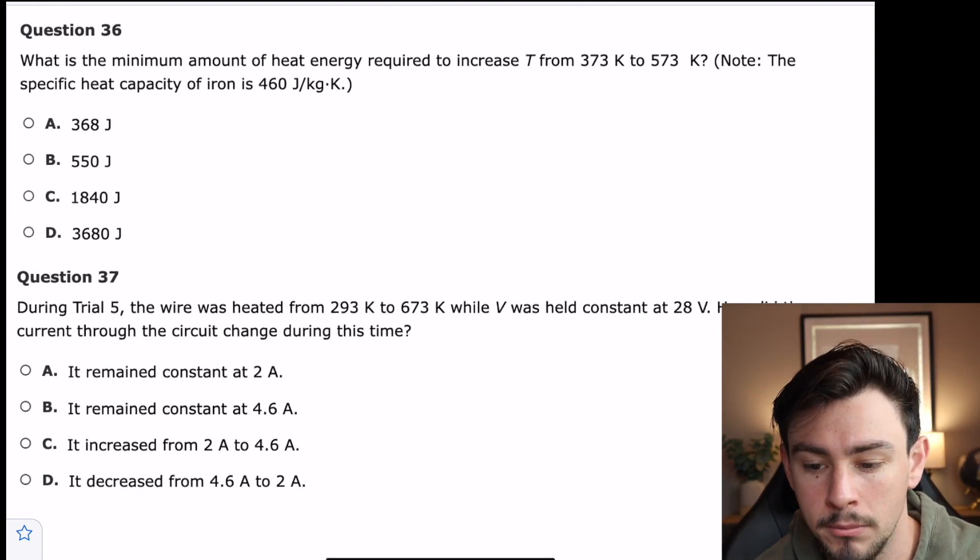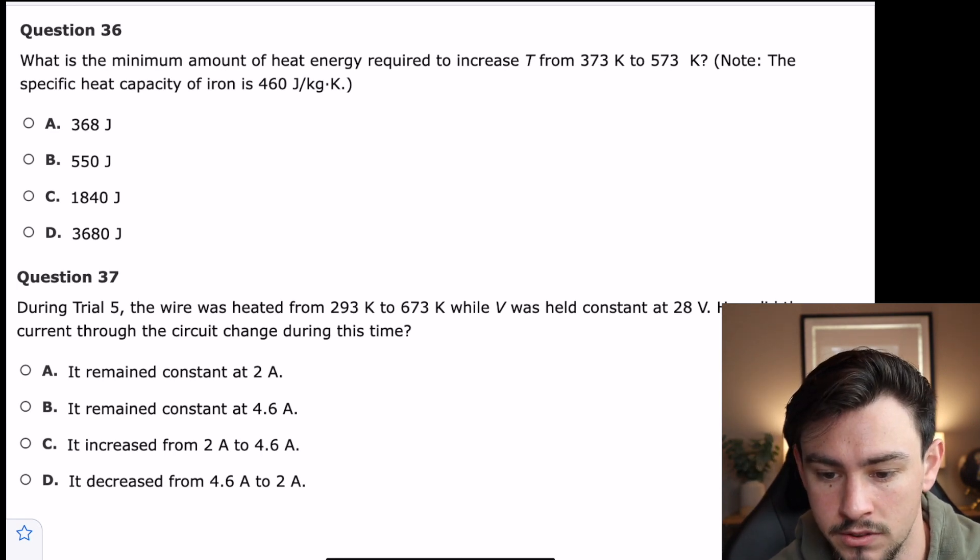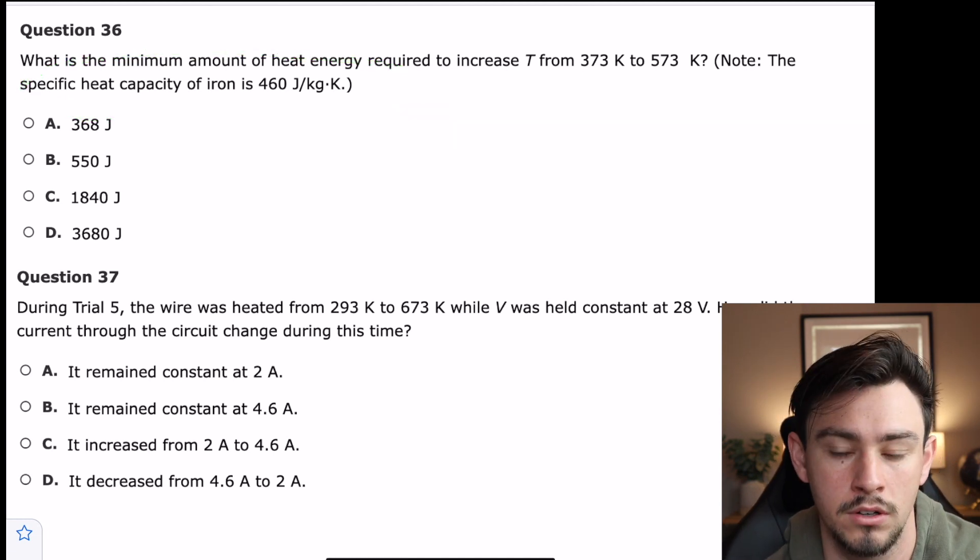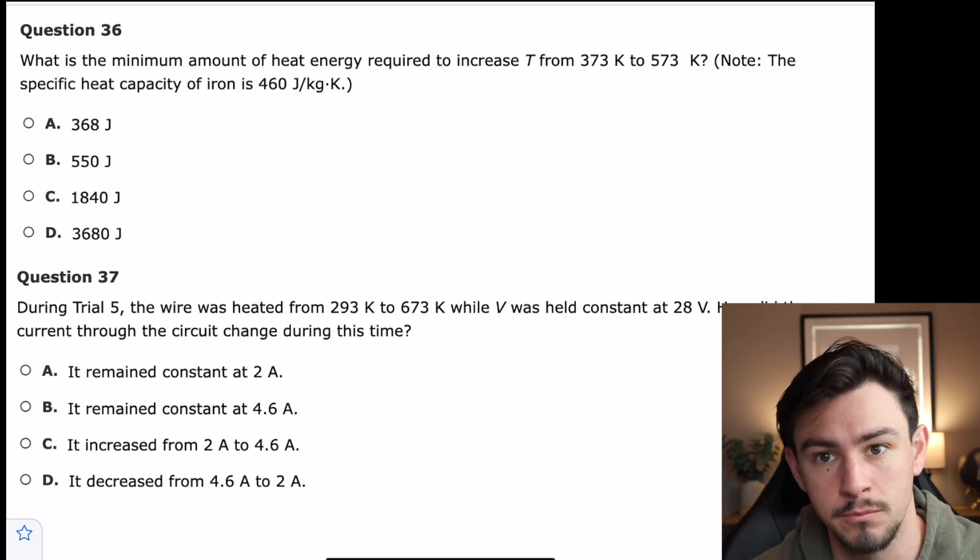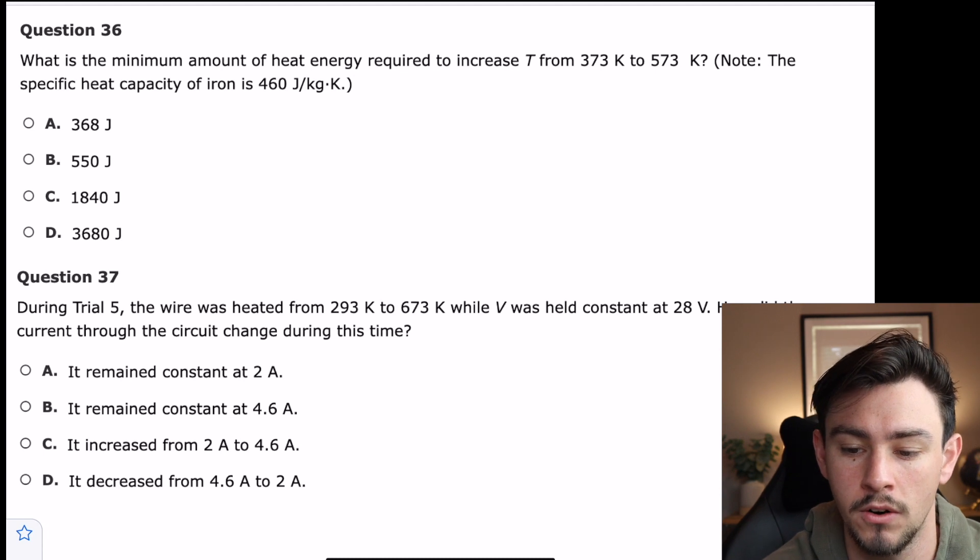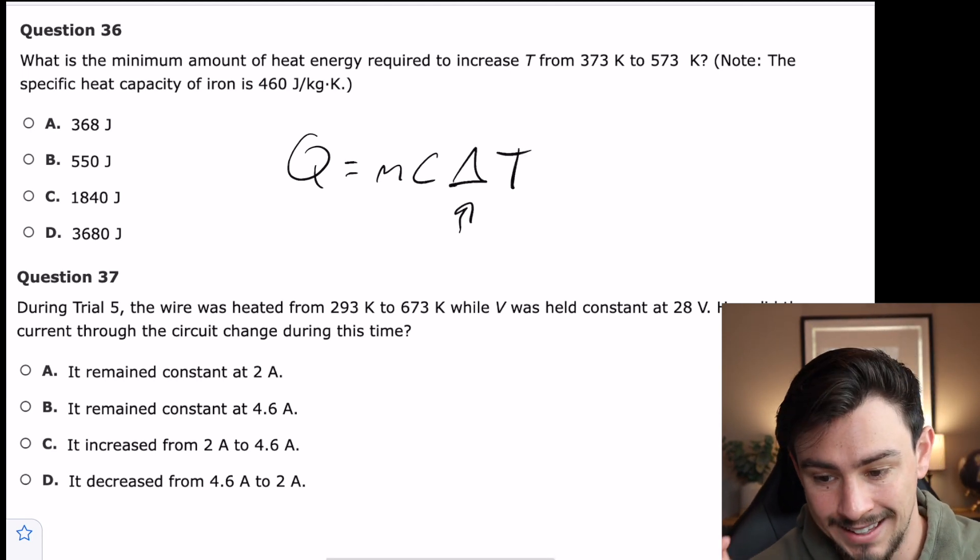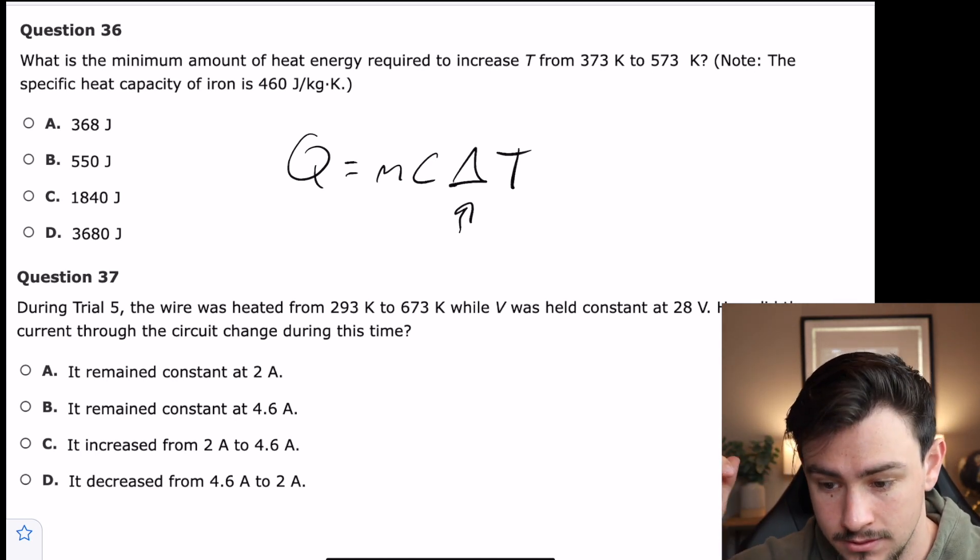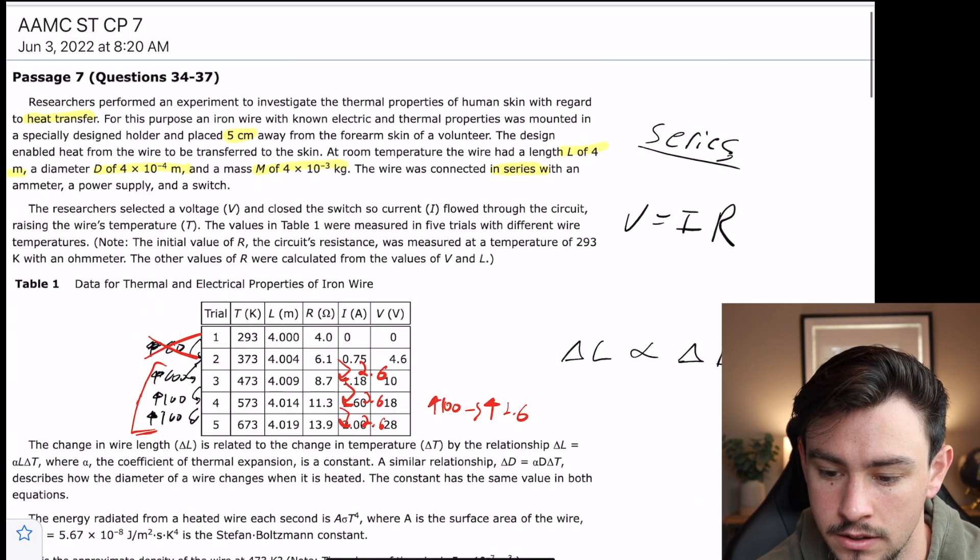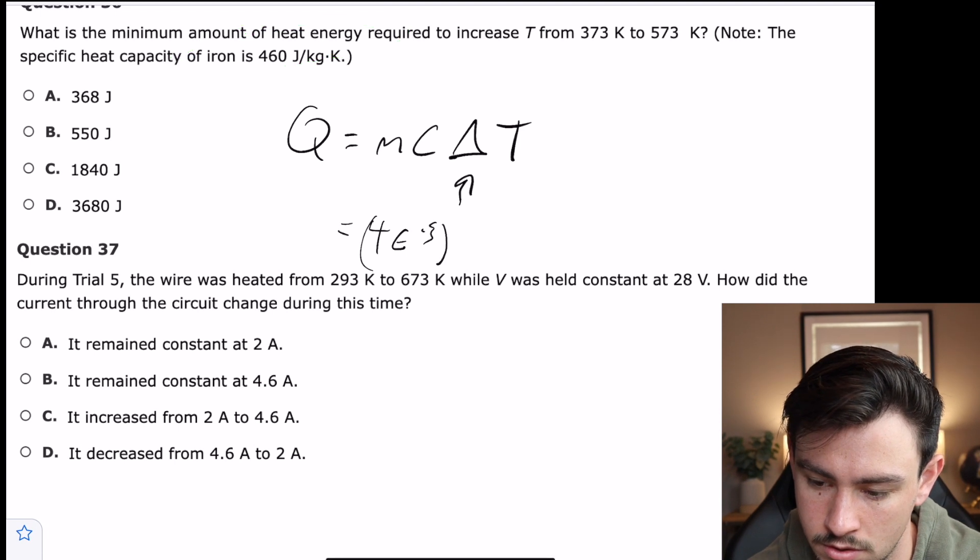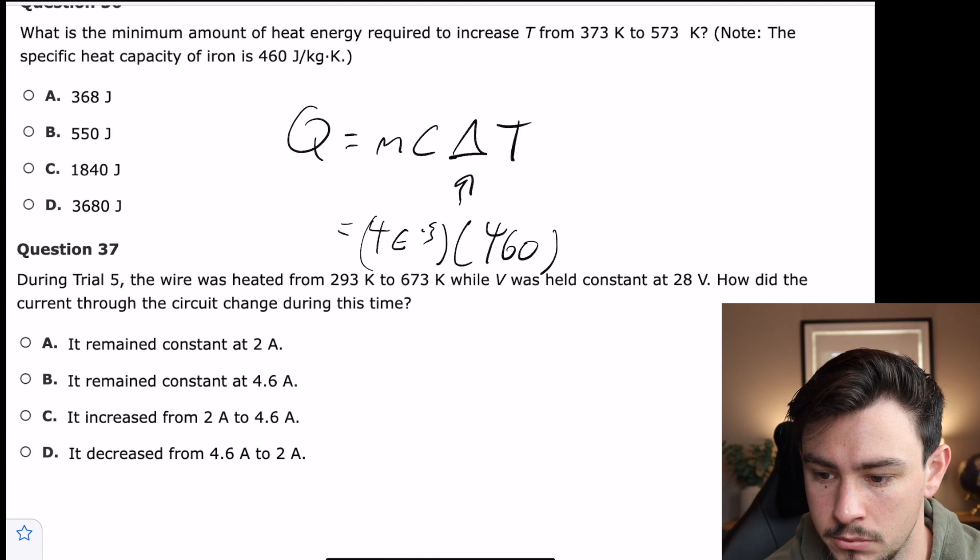Question 36 says, what is the minimum amount of heat energy required to increase temperature from 373 Kelvins to 573 Kelvins? And then it says, note the specific heat capacity of iron is 460 joules per kilogram times Kelvin. So they tell you exactly what you're looking for. You're looking for heat energy. And so then you kind of rack your brain, which of these equations that I have memorized tells me heat energy? And that's when you get to the most ironic equation of them all. And that is Q is equal to MCAT. It's actually a delta sign. So heat is equal to mass times heat capacity times your change in temperature. So let's crank that out. Remember our mass is in our passage right here. Our heat capacity is given to us: 460 joules. And I'm making sure to check the units the whole time.